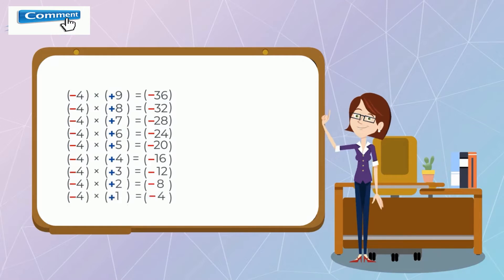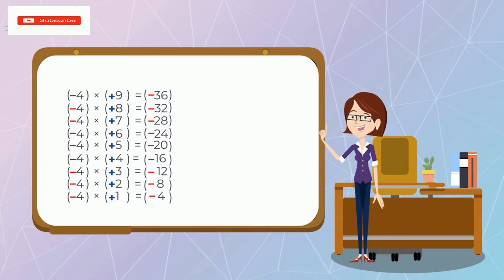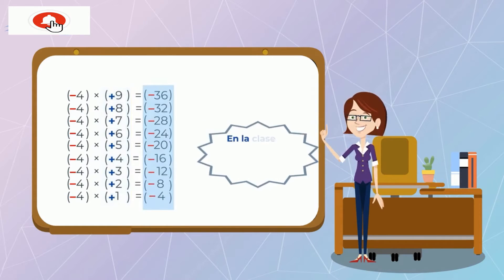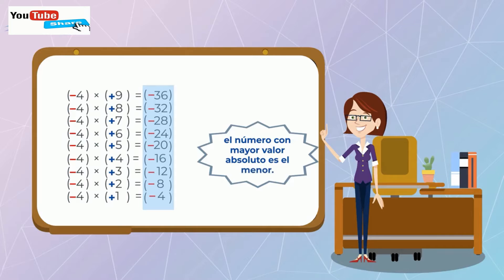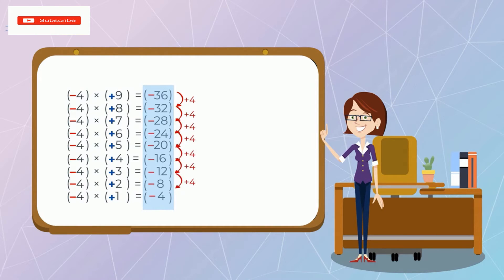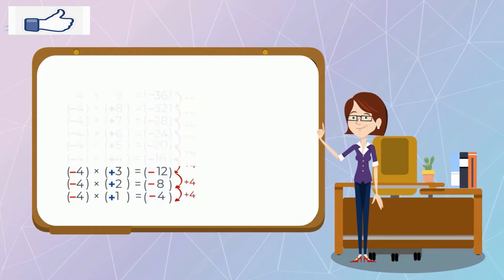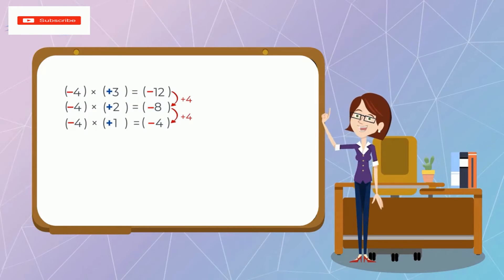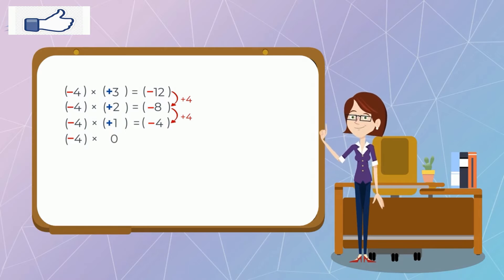En este caso, observemos que a medida que el multiplicador disminuye en 1, el producto aumenta en 4. Lo que es 4 por 0, siguiendo el patrón, en efecto da 0.